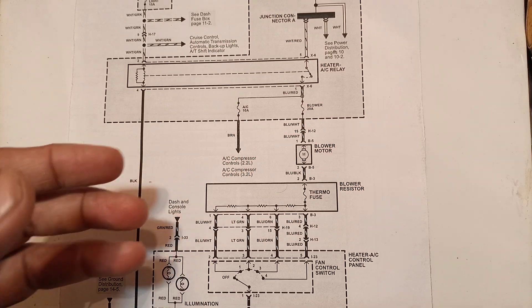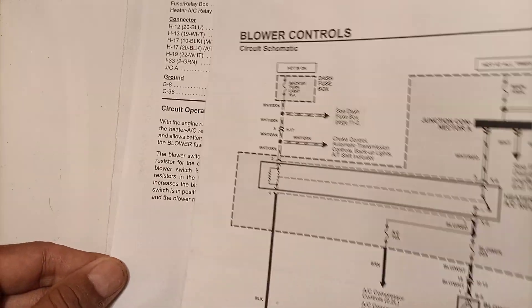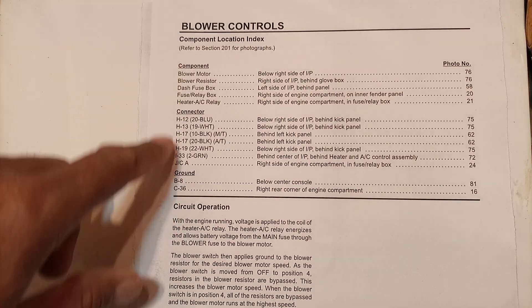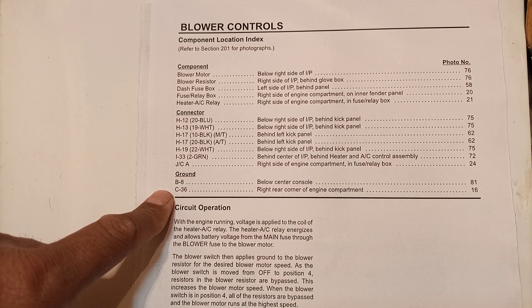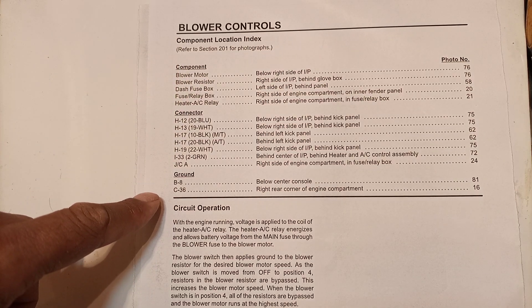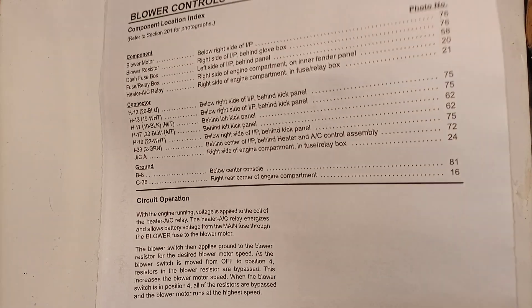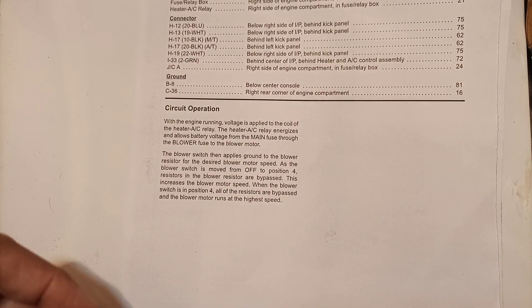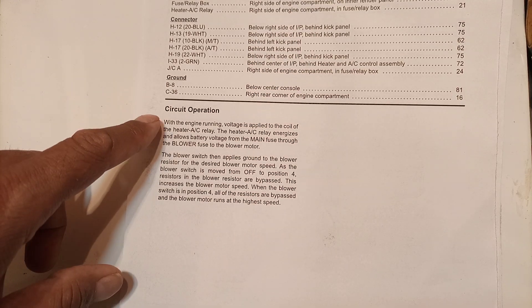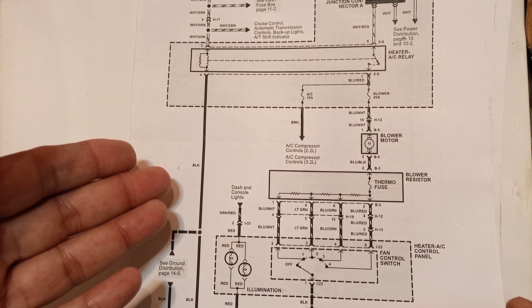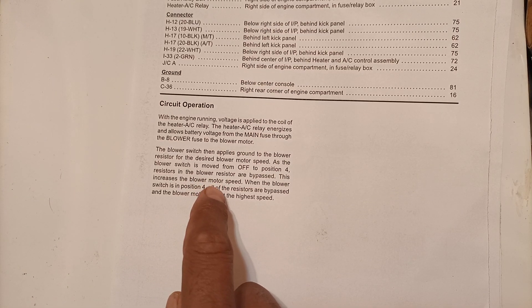I'm hoping you learned from these diagrams and explanations. In another sheet you can see the component location — all component locations are given for this particular vehicle, including all ground points, supply points, connectors, and components involved. Photos are also there, but I'm not going to show those here. The circuit operation I already explained in the schematic, which is more than enough, but this sheet also has a brief explanation for those who want to study further.